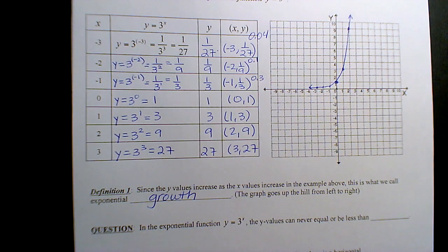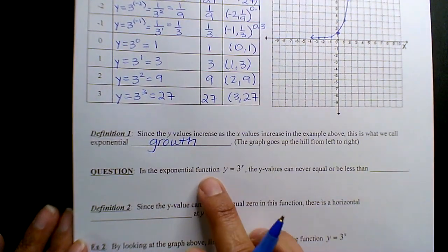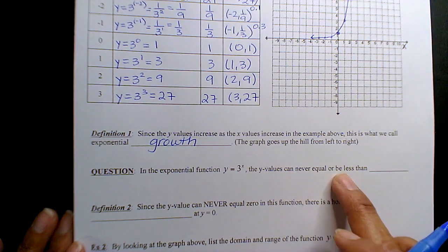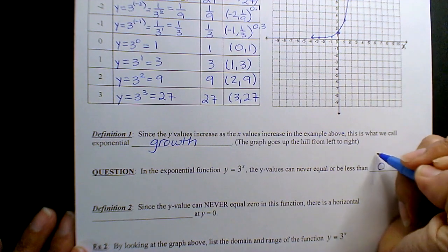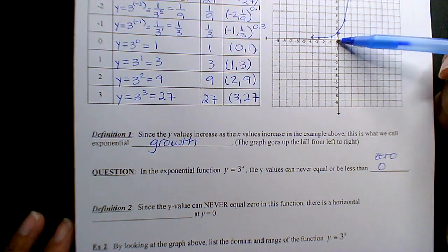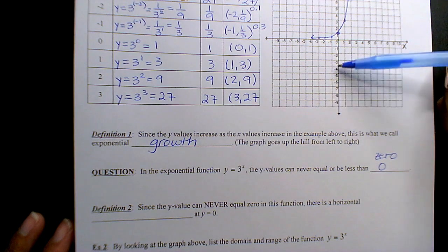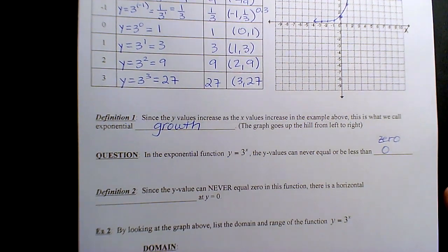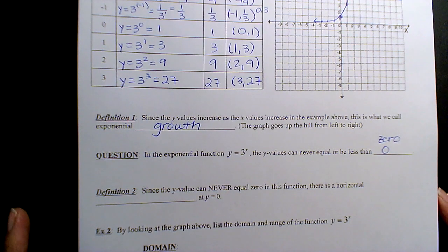You go into medicine, eventually we'll do decay. That's also like carbon monoxide poisoning. The way it leaves your body is also an exponential decay function. Here it says in the exponential function y equals 3 to the x, the y values can never equal or be less than 0. It's never going to cross into quadrant 3 or 4 for this function.